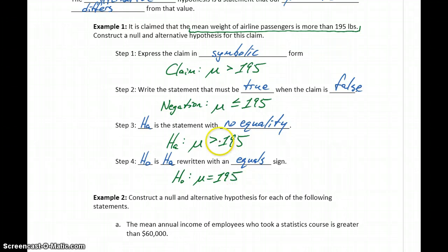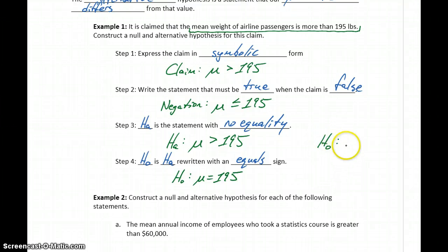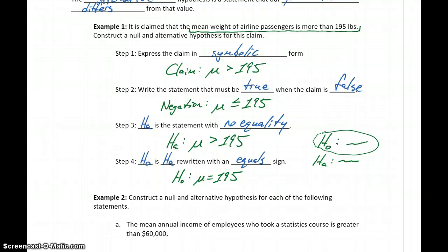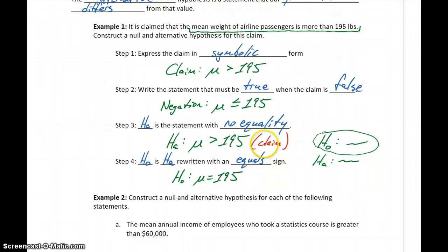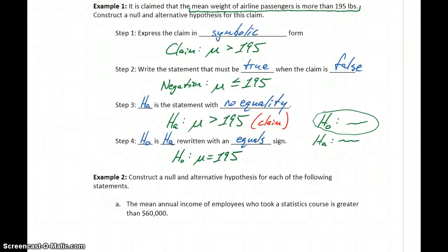This process has us generating the alternative hypothesis first, then getting the null hypothesis. But keep in mind, we always write the null hypothesis first and then the alternative hypothesis under it, because we start with the assumption that the null hypothesis is true. It's also a good idea to keep track of which hypothesis matches your original claim — in this case it's the alternative, but that won't always be the case.